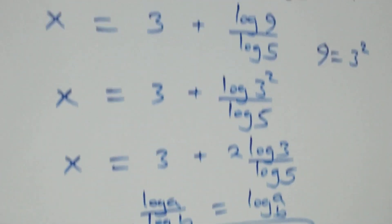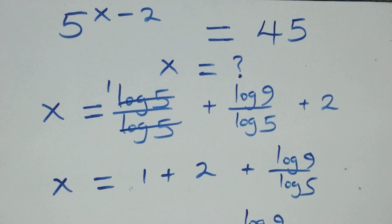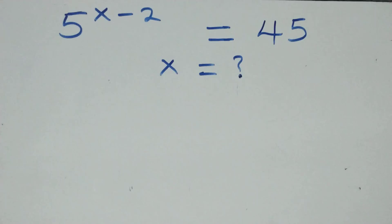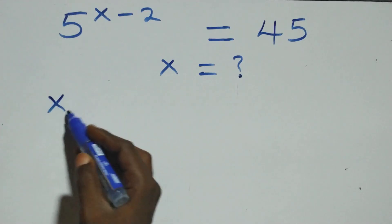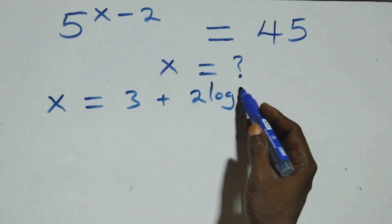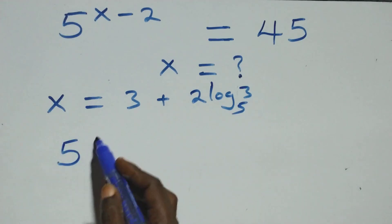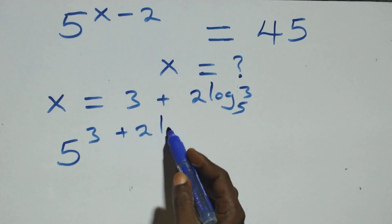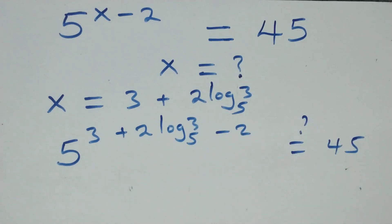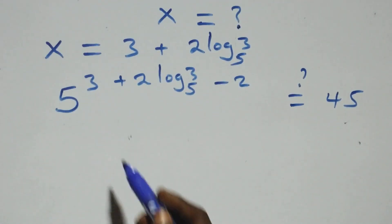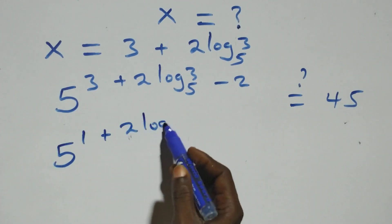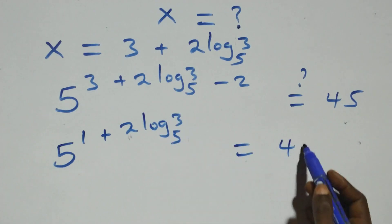Let's check if this satisfies the given problem. We substitute the value of x, which is x equals to 3 plus 2 log 3 base 5. Then what we have becomes 5 raised to power (3 plus 2 log 3 base 5) minus 2 — is it equal to 45? Then 3 minus 2 is 1, so we have 5 raised to power 1 plus 2 log 3 base 5 — is it equal to 45?